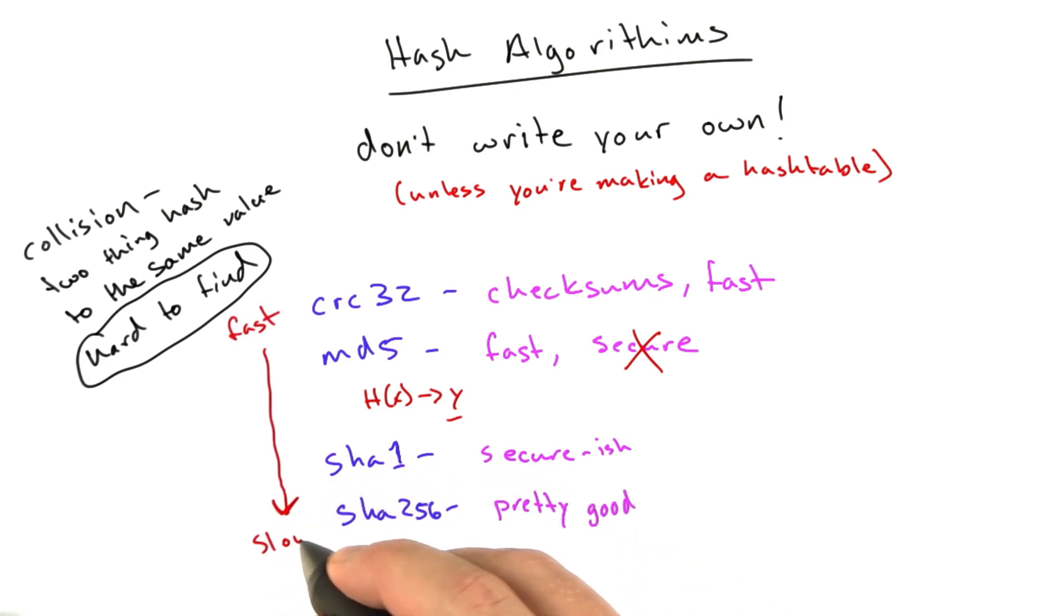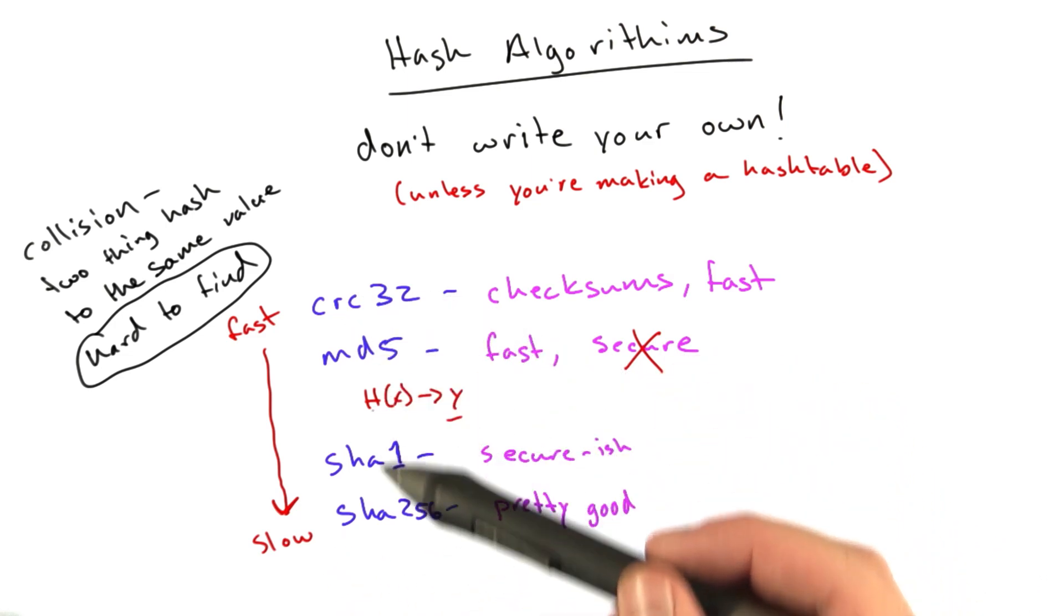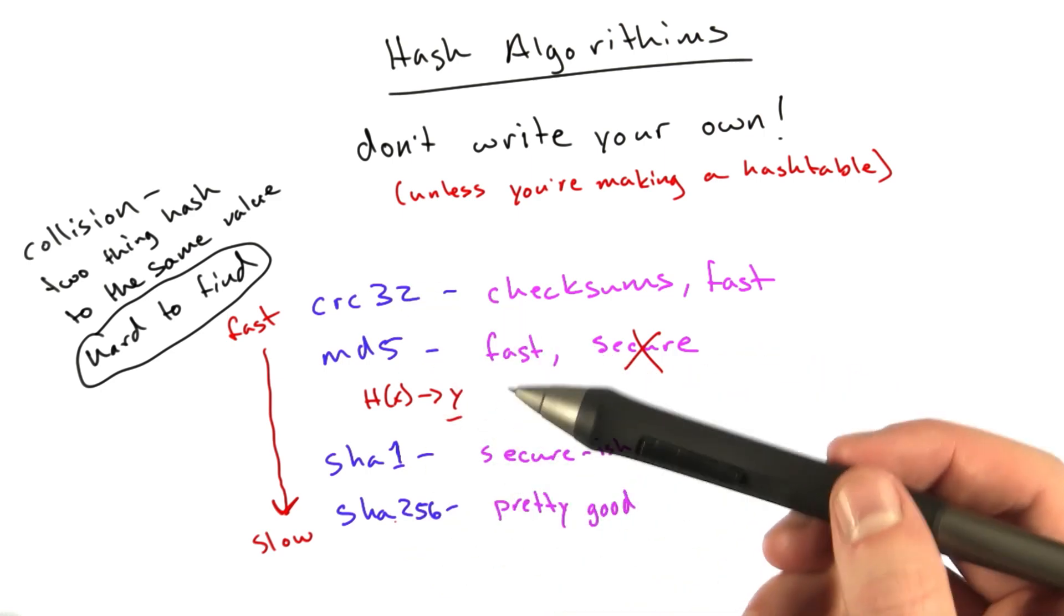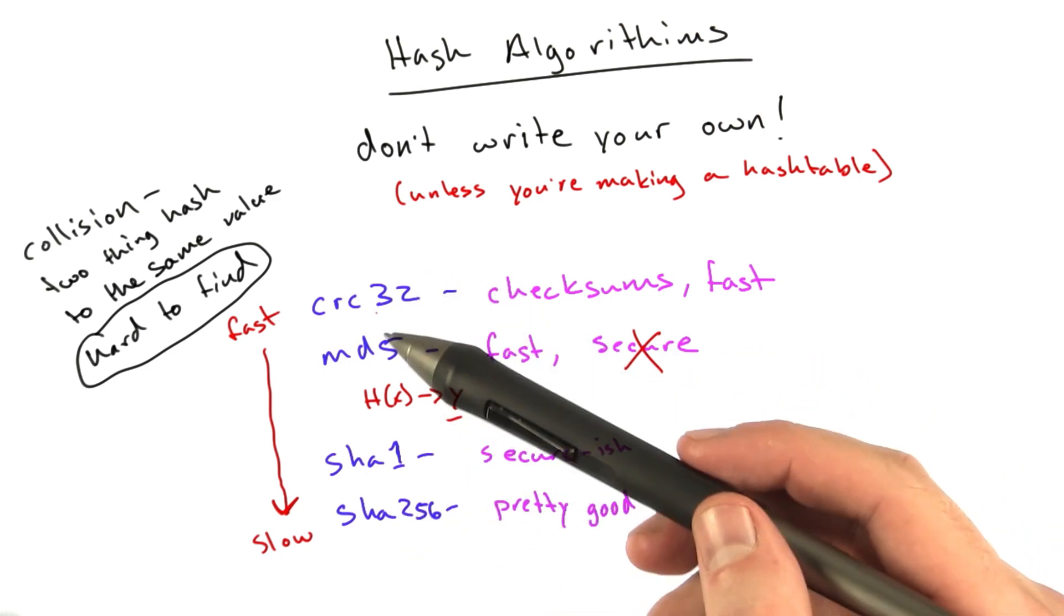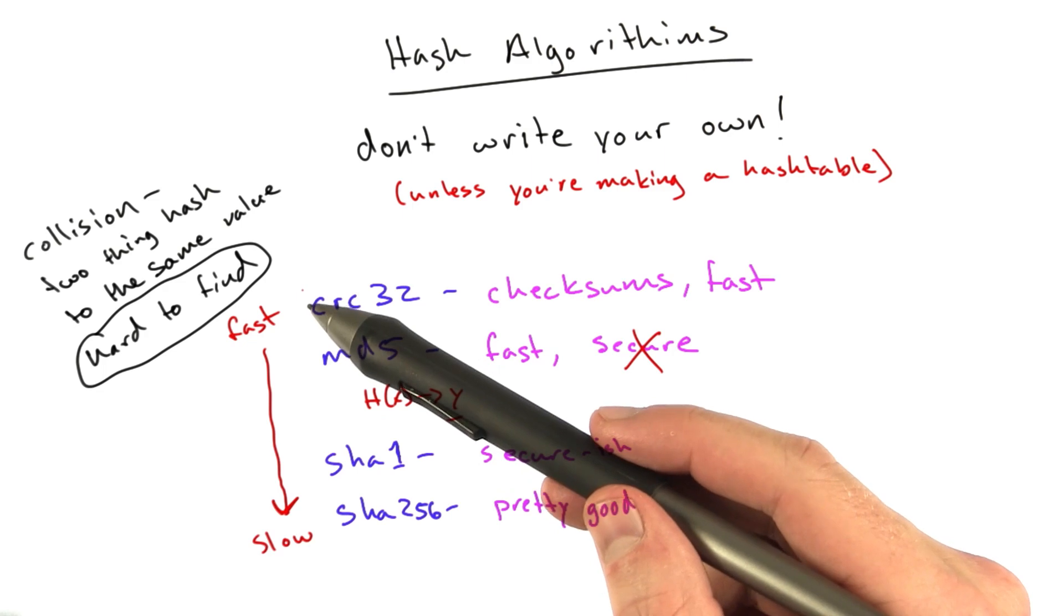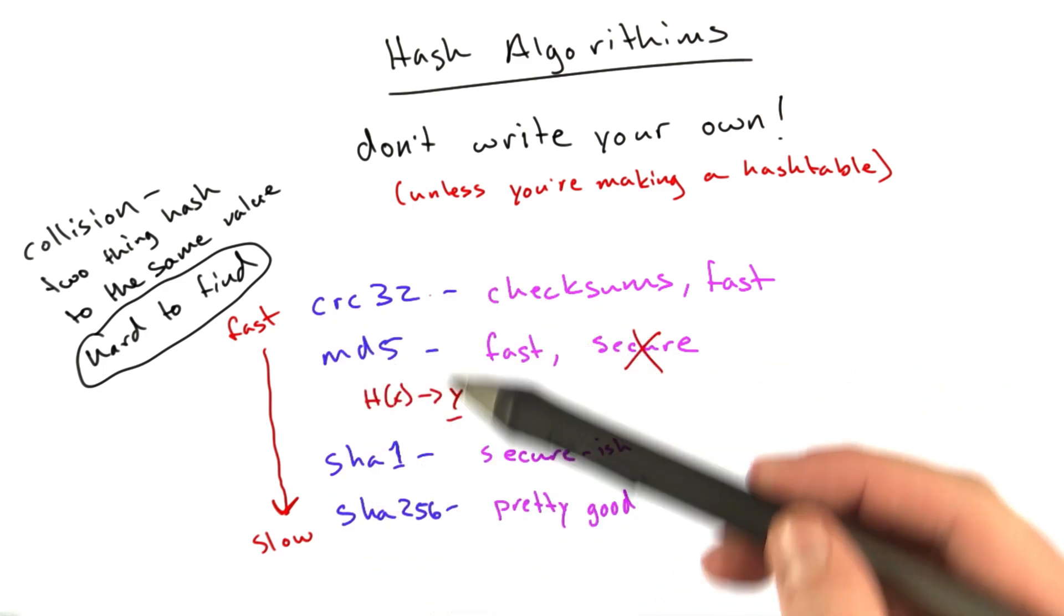Now, of course, the tradeoff is speed. The better your hashing algorithm right now, the slower it is. So these are basically organized in cost and in security. So no big surprise there that there's kind of an inverse correlation between cost and security, but that's the name of the game.